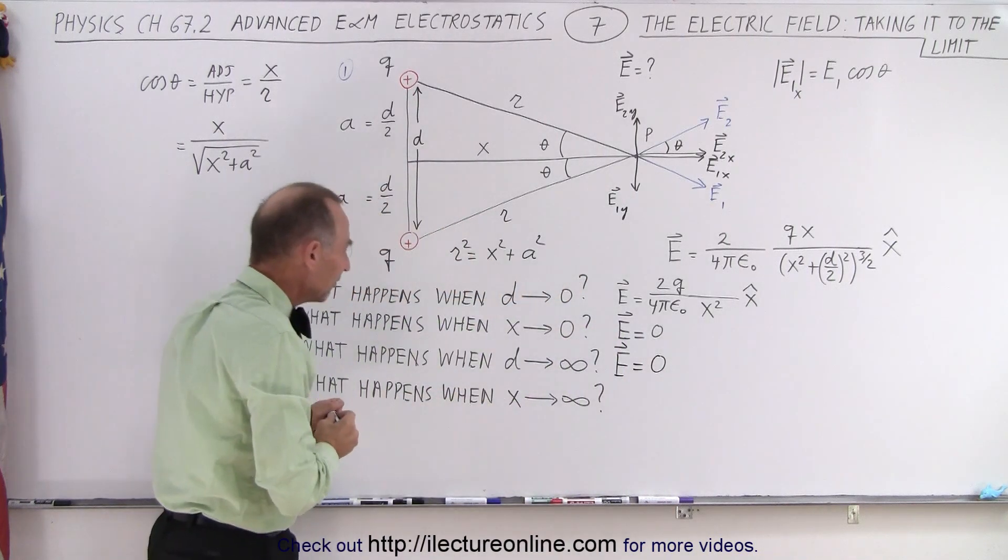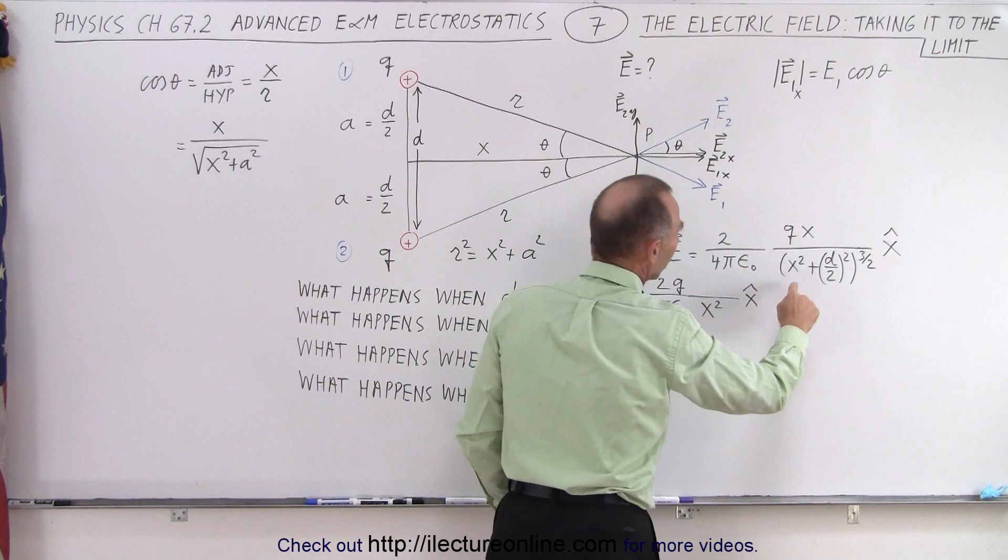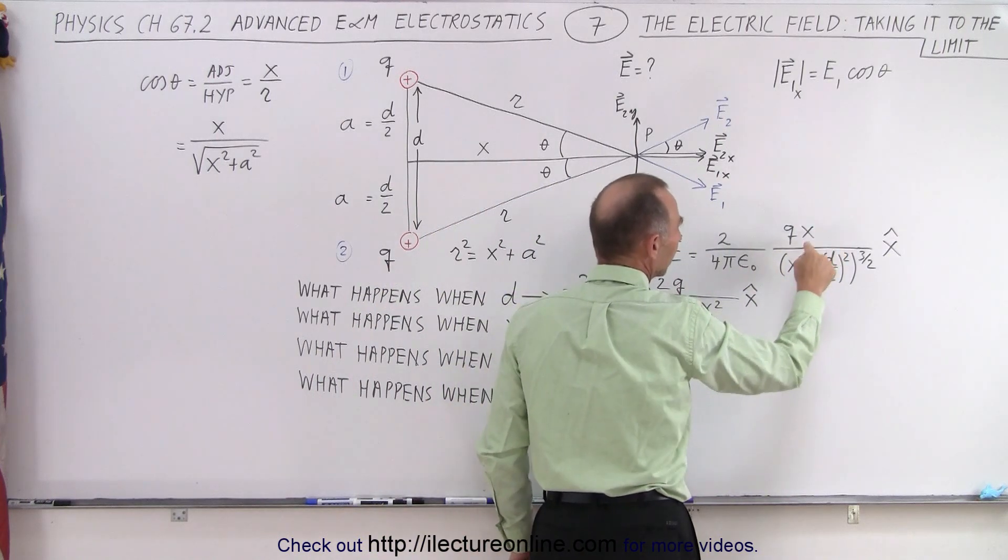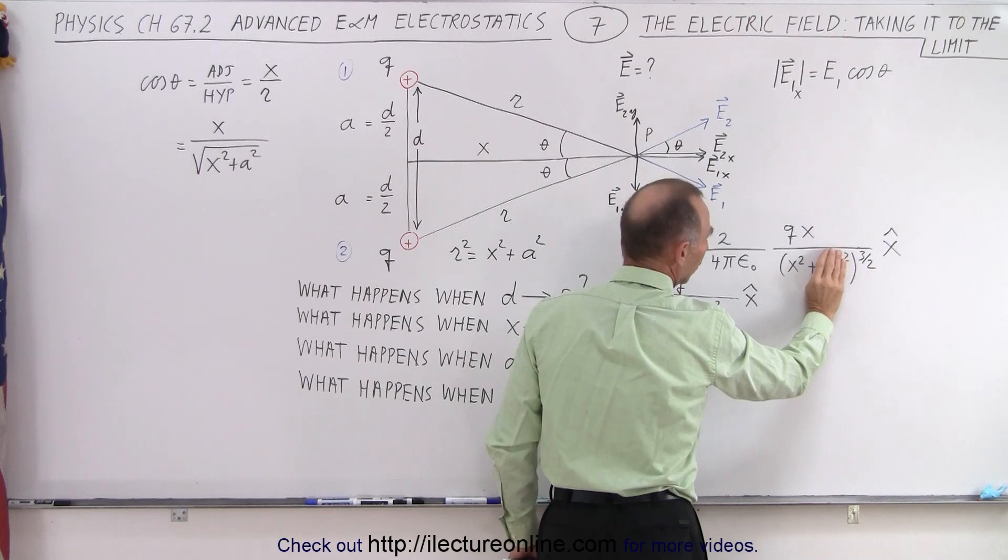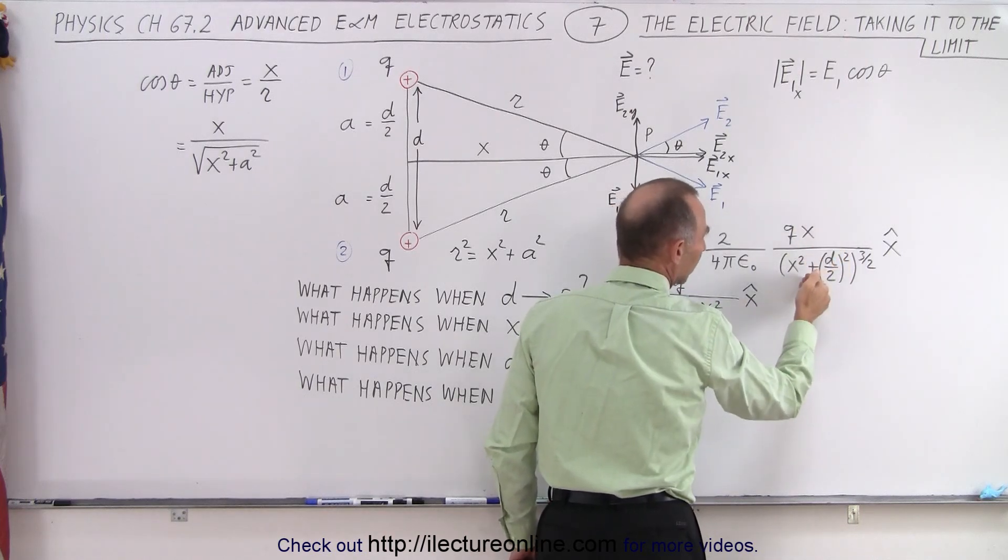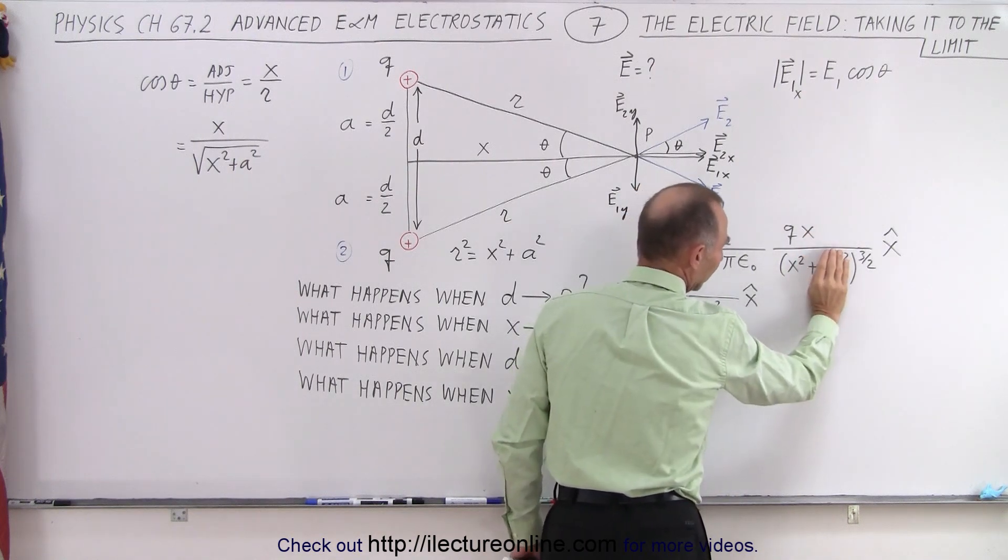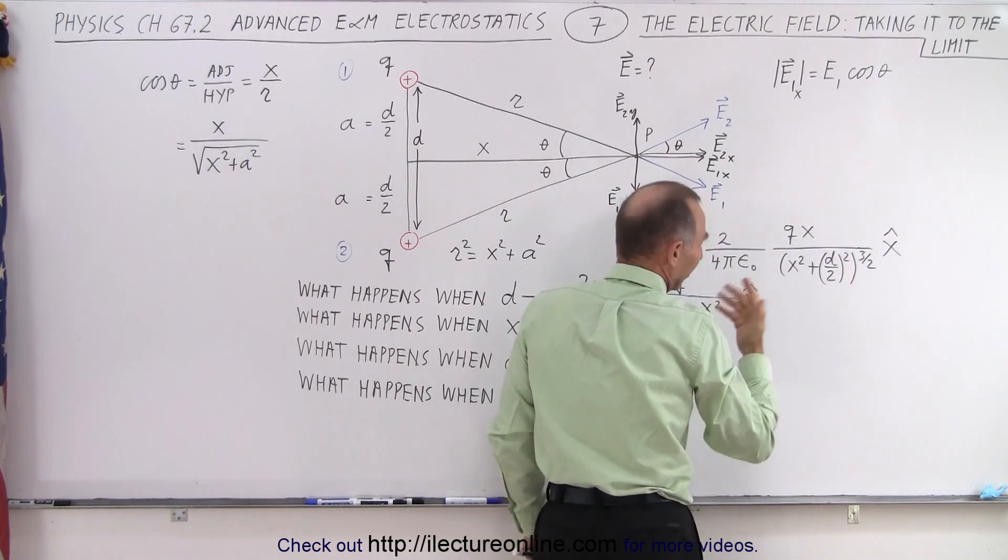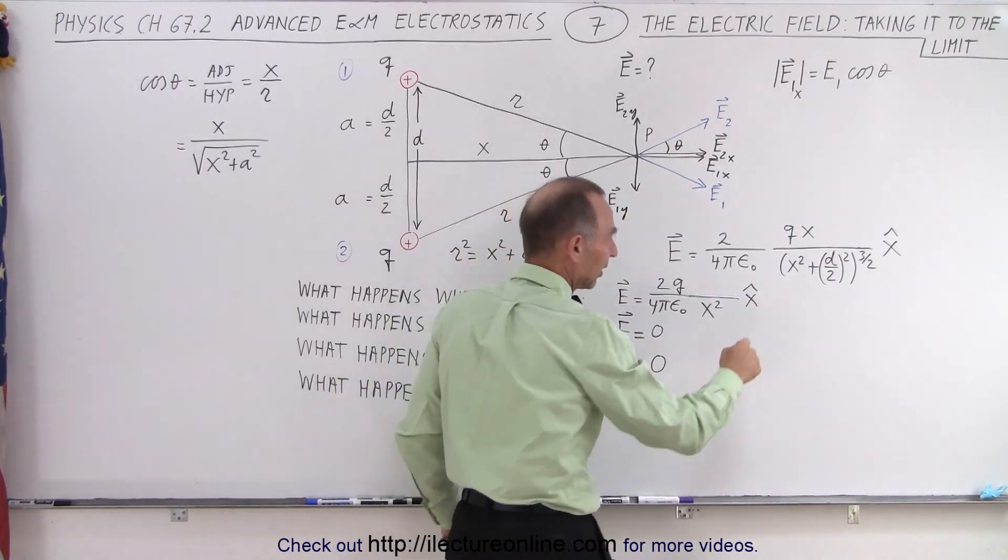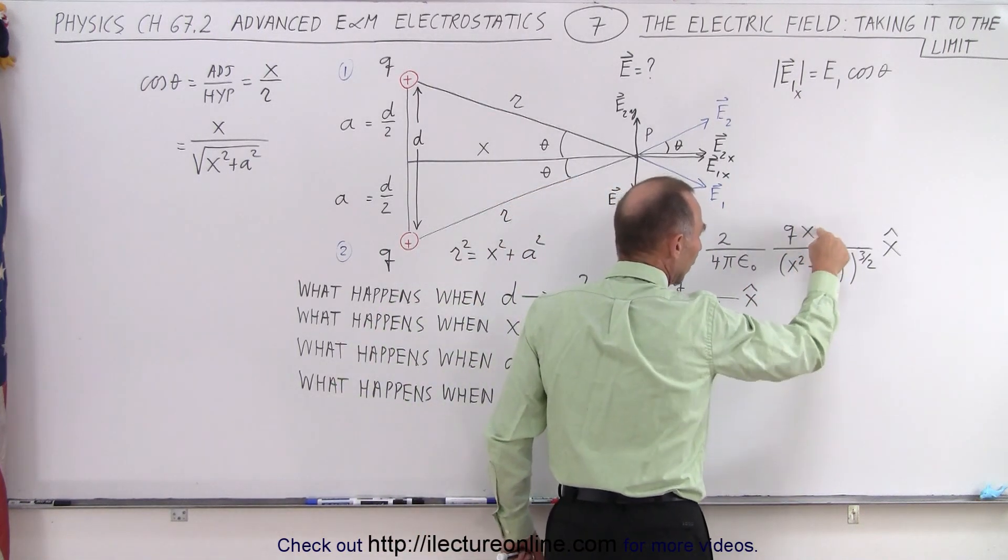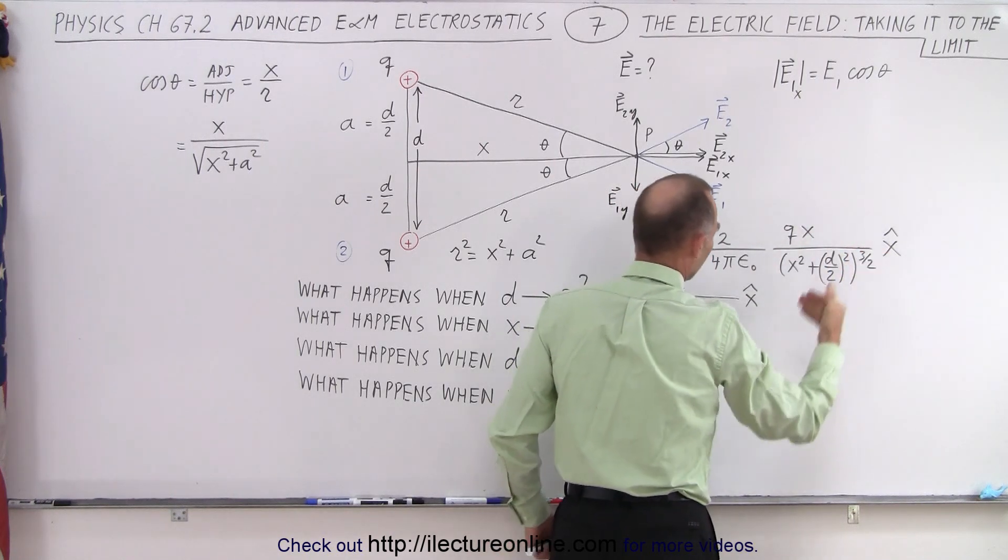And finally what would happen if x goes to infinity? Well when x becomes infinitely large, essentially we have x in the numerator but x³ in the denominator. d would essentially be ignored and so we end up with 1/x². But because x and x³ will cancel out, since d would be so small relative to the enormously large x. So when we have x over x², and x becomes really large, that's essentially 0.